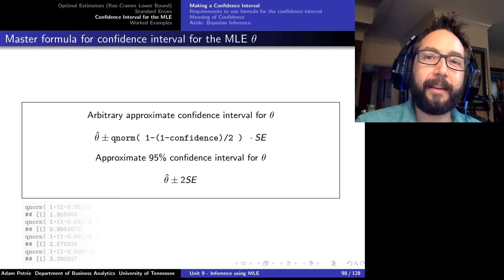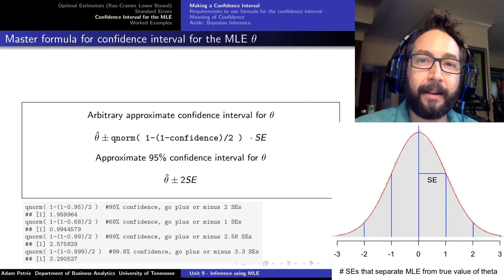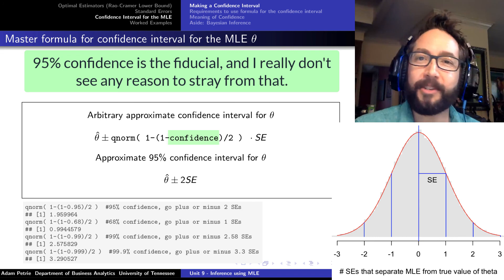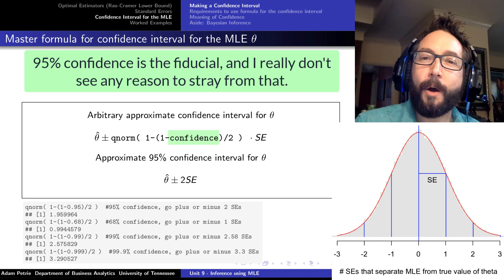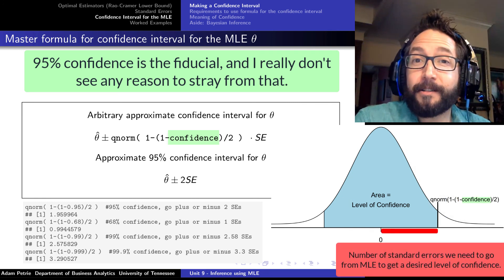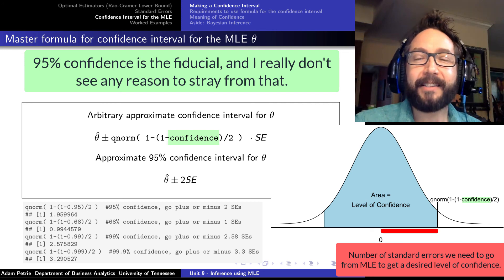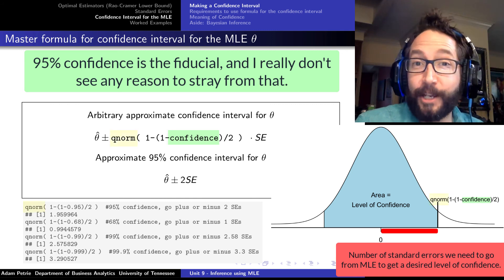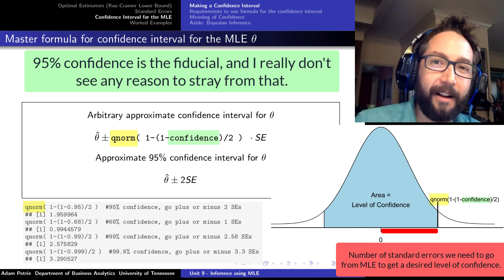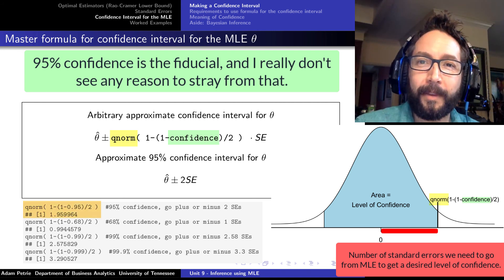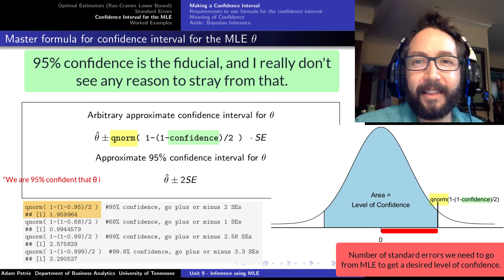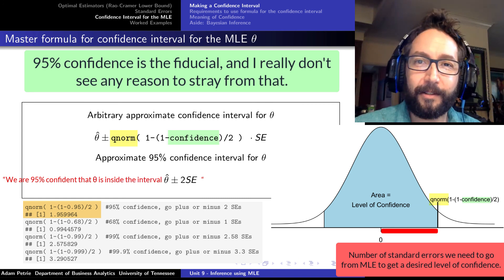We can come up with a master formula for a confidence interval for theta based on the sample values collected and the MLE calculated from them. For any level of confidence — 90%, 95%, or 99% — we figure out how many standard errors to go from our MLE so the interval has the desired chance of covering the true value of theta. We get that number of standard errors from Q-norm. For 95% confidence, that value is just 2. We can then say we're 95% confident that theta is inside the interval theta hat plus or minus two standard errors.